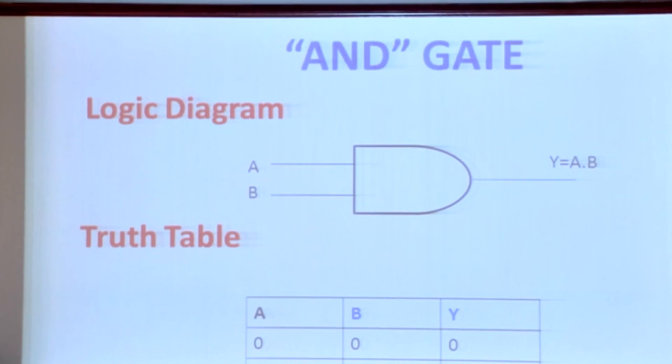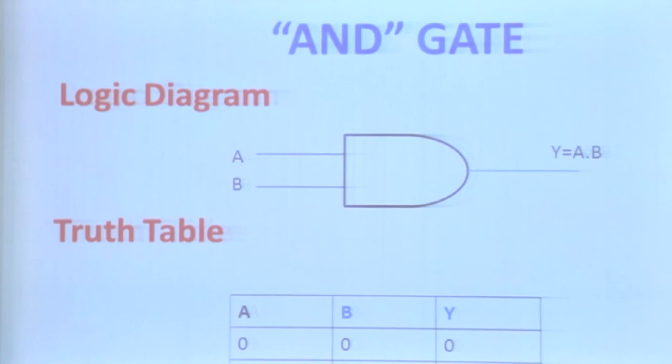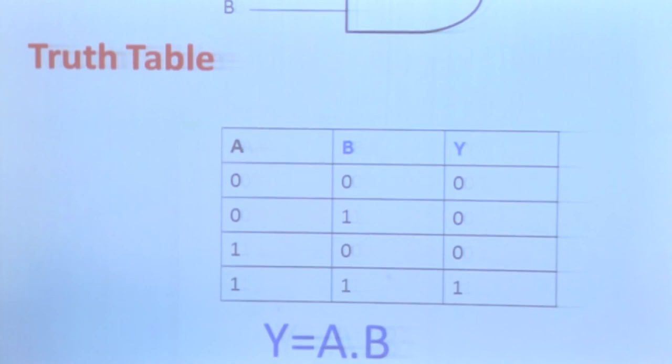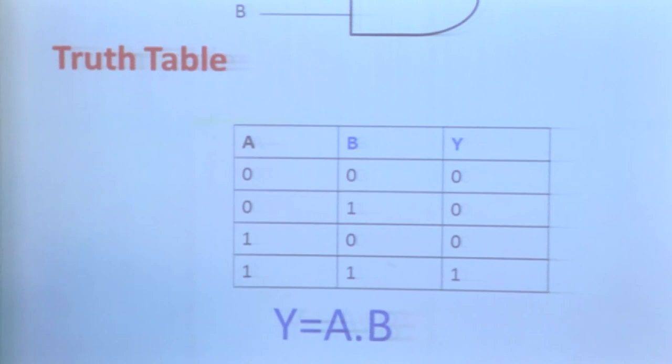First, we will see the AND gate. The expression of the AND gate is A and B. Here, A is one input, B is one input, and the output is Y. Look at the truth table. When both the inputs are 1, the output is 1; otherwise, it is low. The AND gate is represented by the dot symbol.